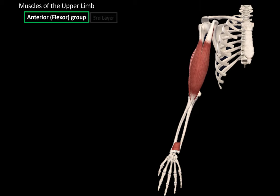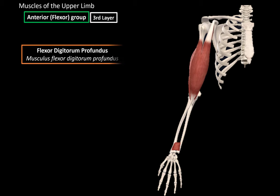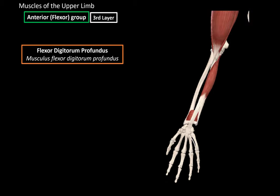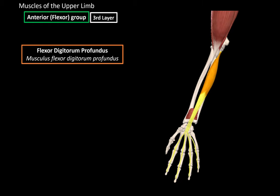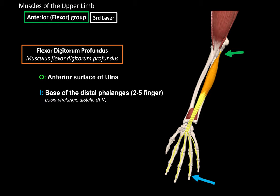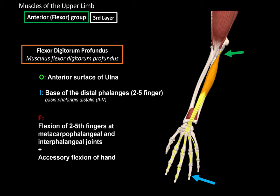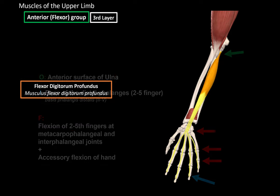Now for the third layer — the first muscle is the flexor digitorum profundus. It originates from the anterior surface of the ulna and inserts at the base of the distal phalanges of the second to fifth fingers. This muscle is responsible for flexion of the second to fifth fingers at the metacarpophalangeal and interphalangeal joints, as well as accessory flexion of the hand.